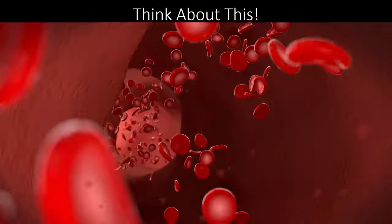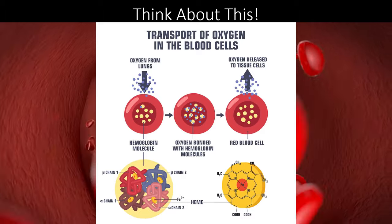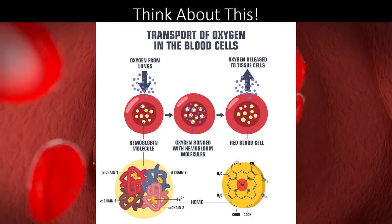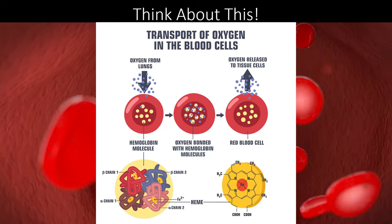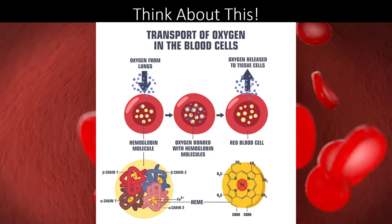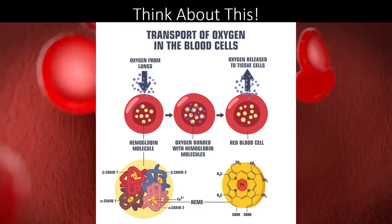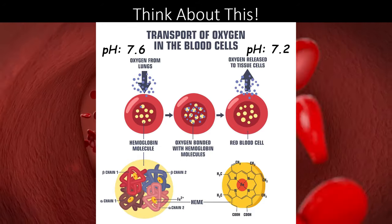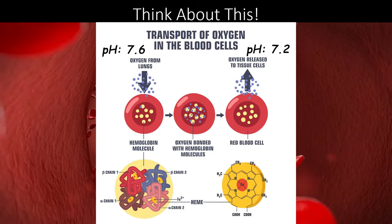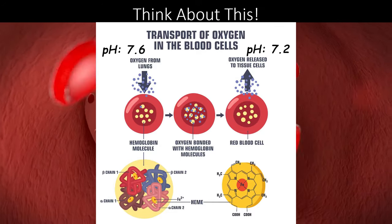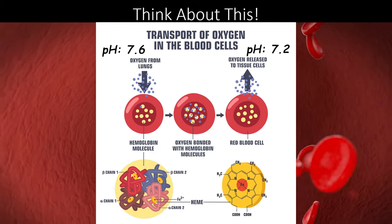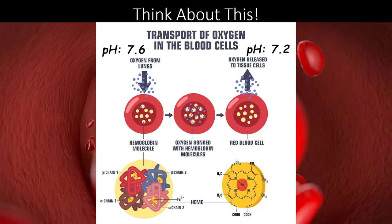Consider a protein that is used by your blood cells to transport oxygen: hemoglobin. This protein carries oxygen molecules from your lungs to your tissues. It works best at the optimal body temperature of 98.5 degrees Fahrenheit and in a pH range of 7.6 to 7.2. Your lungs, at a pH of 7.6 and loaded with oxygen, encourage hemoglobin to pick up oxygen molecules. The carbon dioxide in your tissues lowers the blood pH to 7.2, slightly changing the shape of hemoglobin and encouraging it to dump oxygen into the tissues.